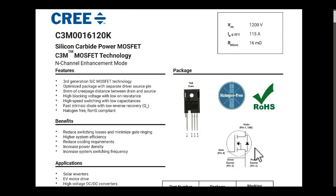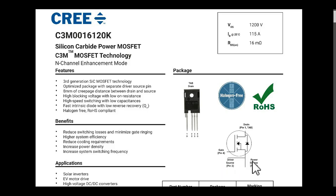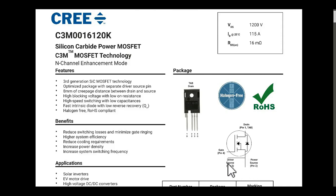Looking at the symbol, pin number 4 is the gate. For the source in this SiC MOSFET, they have given two pins. Pin number 3 will be connected to your gate driver, and the other source pin will be connected to your system ground — that is, your driver ground.